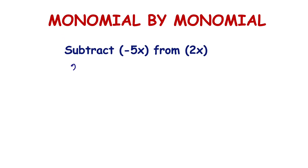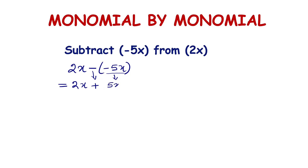How to subtract a monomial by a monomial: subtract negative 5x from 2x. We write 2x minus negative 5x. The subtraction becomes addition because subtraction means addition of the additive inverse. So negative 5x becomes positive 5x. Now add 2x plus 5x — both are like terms. 2 and 5 are the numerical coefficients, so 2 plus 5 equals 7, giving us 7x as the result.